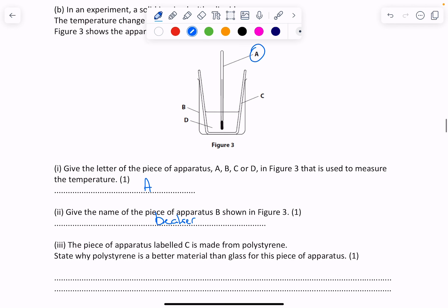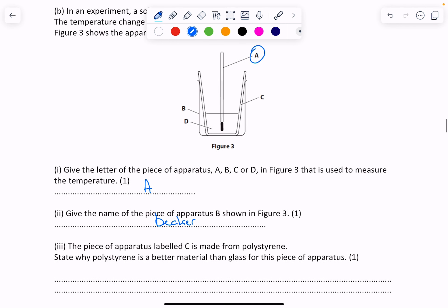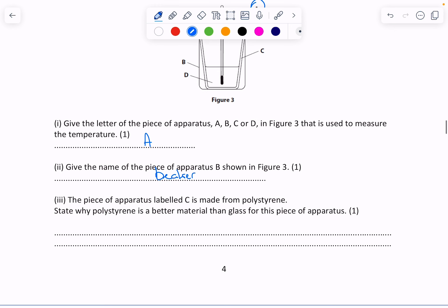Apparatus labeled C is made from polystyrene. State why polystyrene is a better material than glass. So polystyrene is better because it is an insulator, and that means it's going to keep the heat in the reaction and not let the heat escape.